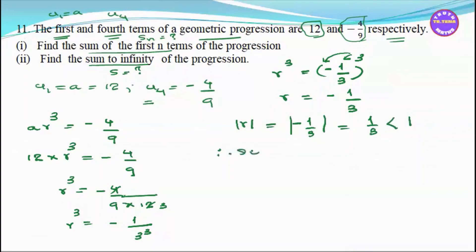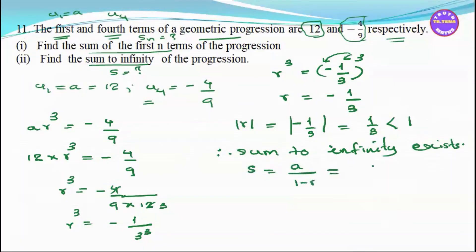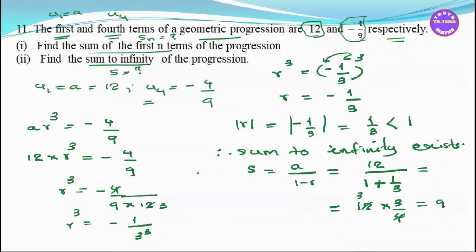Therefore sum to infinity exists. The sum to infinity formula is a by (1 minus r). a = 12, r = minus 1 by 3, so 1 minus r = 1 plus 1 by 3 = 4 by 3. Therefore sum to infinity = 12 divided by (4 by 3) = 12 times 3 by 4 = 9.